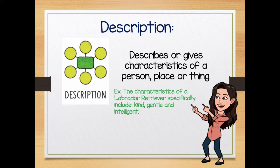The first type of text structure you might come across when reading a non-fiction text is a description. A description gives you a description — it describes or gives characteristics of a person, place, or thing. Therefore, it gives a picture in your mind of what the author is trying to tell you.